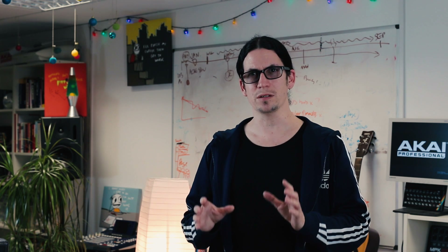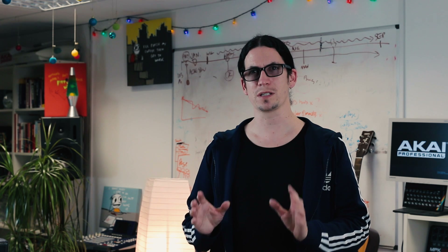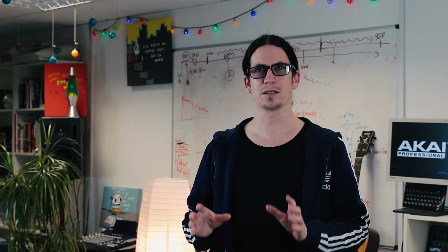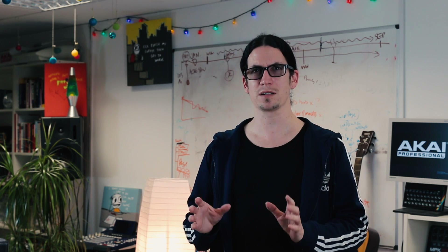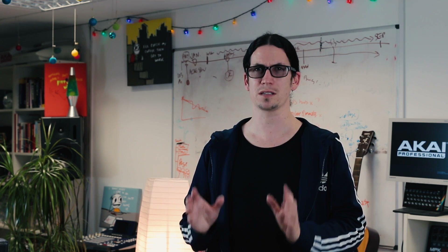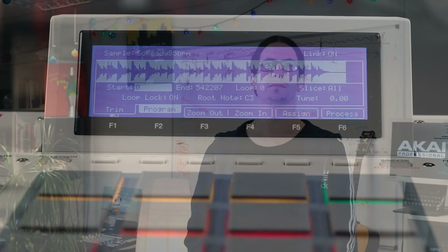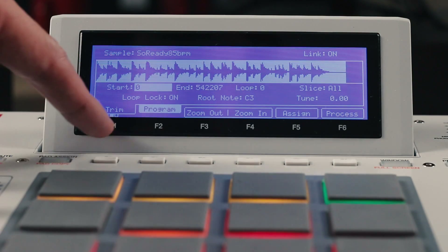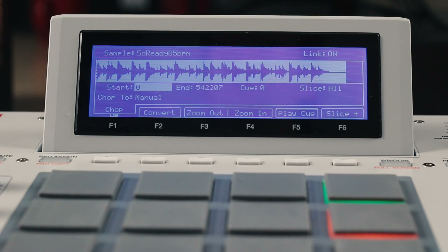Before showing you our other non-destructive chop facilities, let's take a look at some of the improvements we've made to sample edit, because these workflows underpin the new sample slicing experience. Trim and chop now live on the same F key, but we've also brought their functionality closer together. In 1.8, trim is essentially a more detailed view of one of your chop slices.